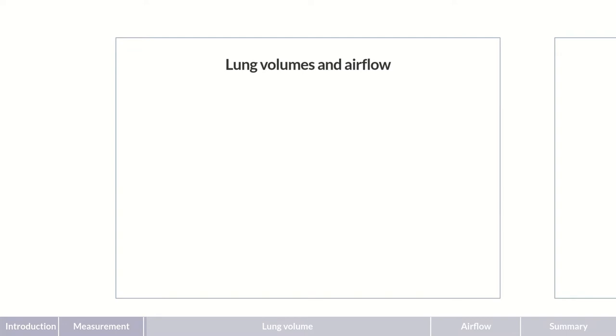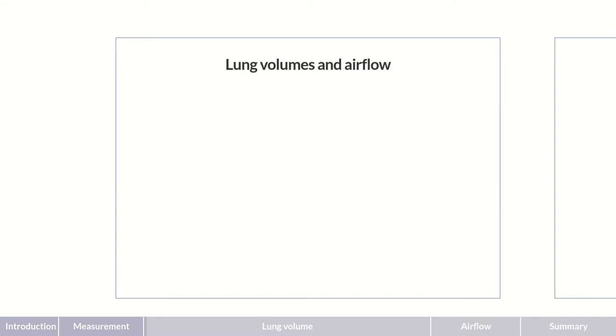During spirometry, the patient is asked to perform various breathing maneuvers, from which a graphical output of the respired volume against time is presented as a curve. This curve is termed a volume-time curve. Volume is shown along the y-axis, and time along the x-axis. At the beginning, the patient is asked to take normal breaths. During inspiration, lung volume increases, which is represented by a rising curve. When exhaling, the curve follows accordingly. We can now see the tidal volume, in short, TV.